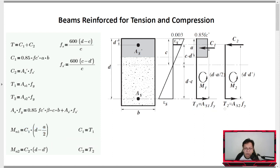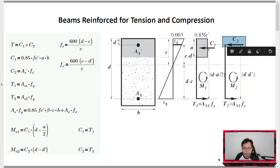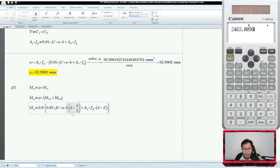Which is why earlier, my MN1 uses C1 which is 0.85 Fc prime, because I don't have AS1. The same here - since I don't have AS2, I'll use C2 in the equation. So C2 is AS prime times FS prime or in this case FY, multiplied by D minus D prime. Again, don't interchange the moment arm. The moment arm for MN1 is D minus A over 2, the second moment arm is D minus D prime.